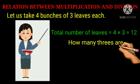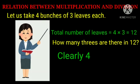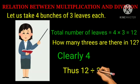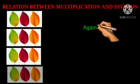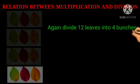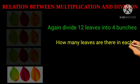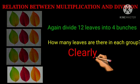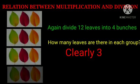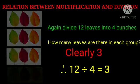So how many 3's are there in 12? Clearly 4, because if we divide 12 by 3 we get 4. Thus 12 divided by 3 equals 4. Now again divide 12 leaves into 4 bunches. So how many leaves are there in each group? Clearly 3, because if we divide 12 by 4 we will get the answer 3. Therefore 12 divided by 4 equals 3.